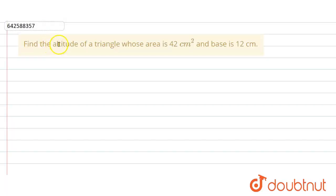In the given question, we have to find the altitude of a triangle whose area is 42 centimeter square and base is 12 centimeter.